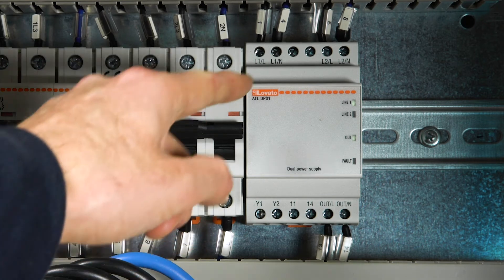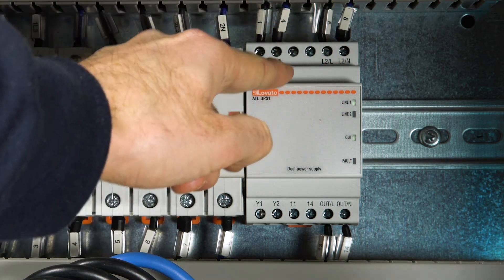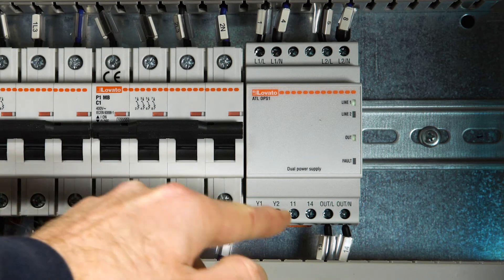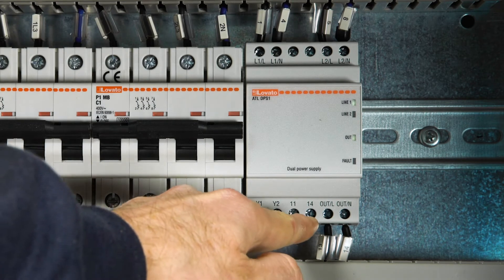At the top, use the two terminals for the single phase sources. Below this is the connection to the power inputs of the ATL 610.